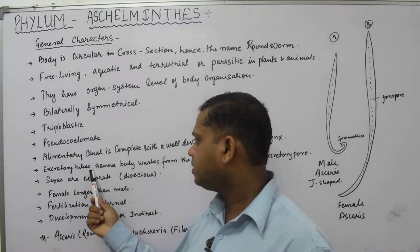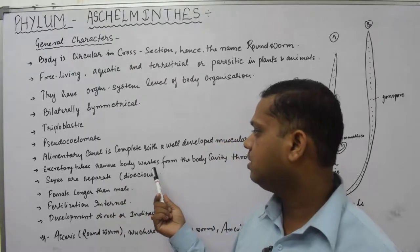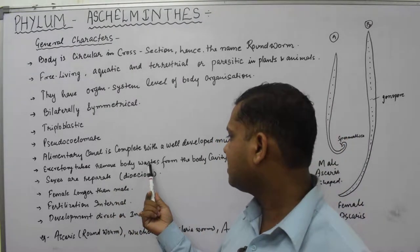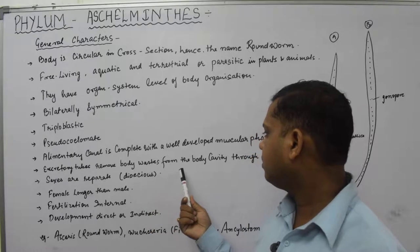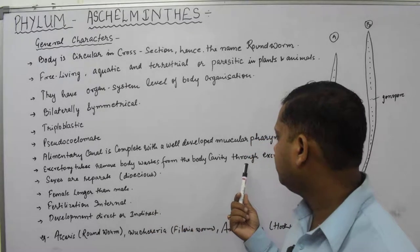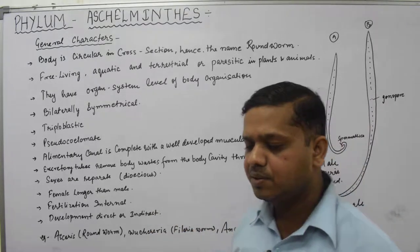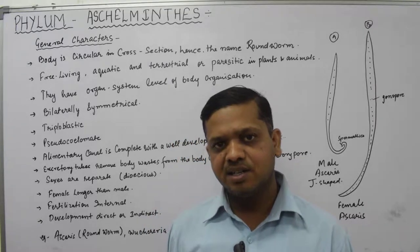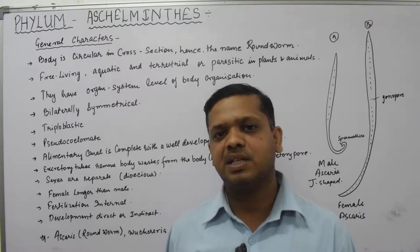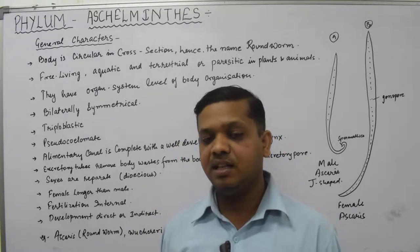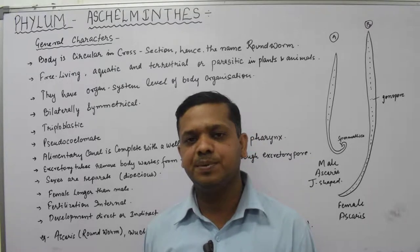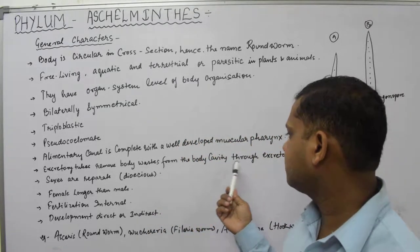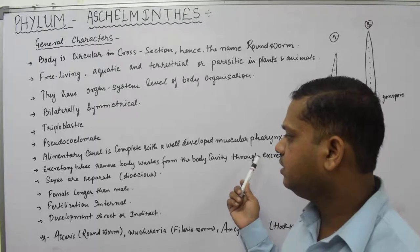Excretory tubes are present. They help in removing the waste products of the body from the body cavity through the excretory pore. There is an excretory tube inside the animal along with an excretory pore, through which waste materials are excreted out of the body.